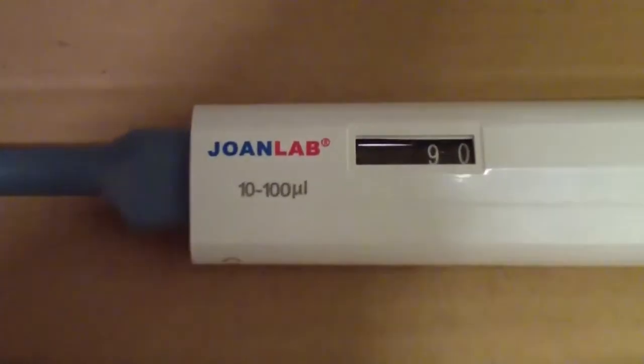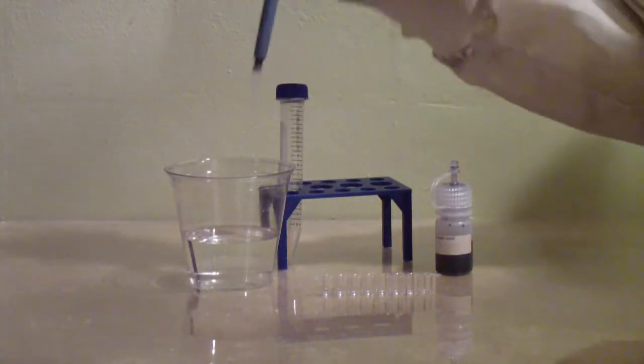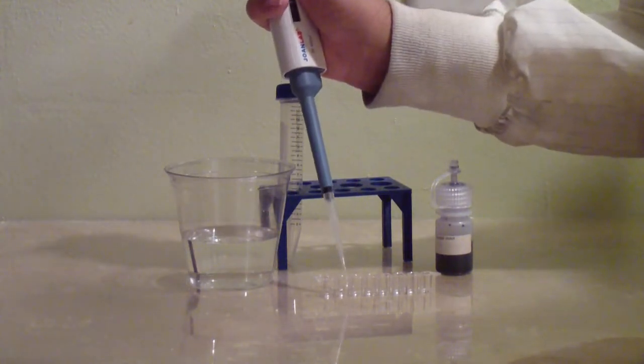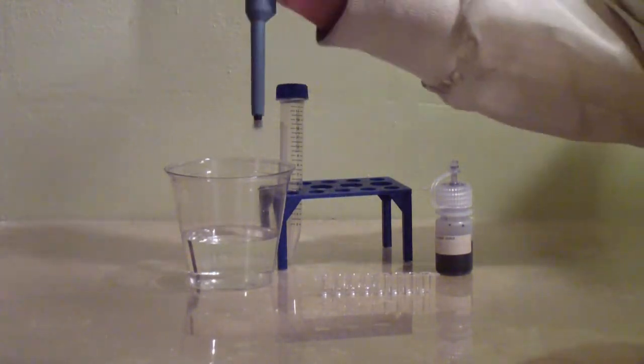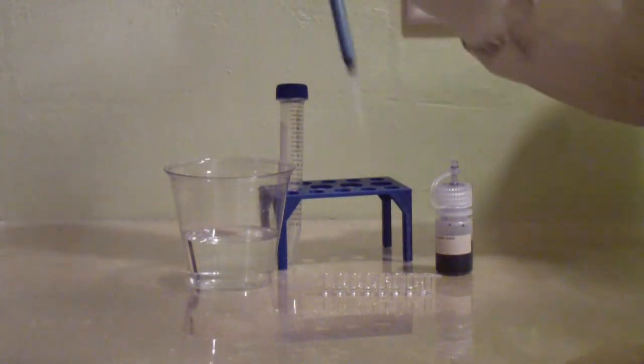Set the pipette to 90 microliters. Pipette 90 microliters of water into each of the eight wells of the ELISA strip. Hold the ELISA strip up to ensure that all the wells have an equal amount of liquid in them.